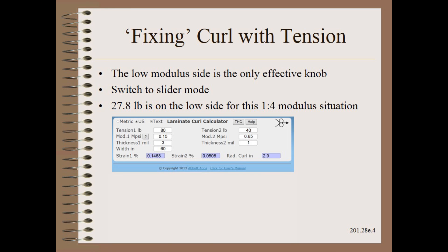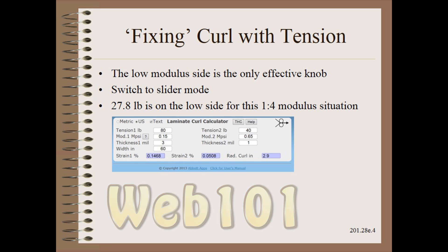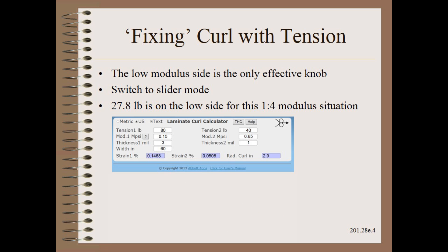As we learned in the NIP application module of Web101, the only effective knob for curl is the low modulus side. In this case, it is the polyethylene side.